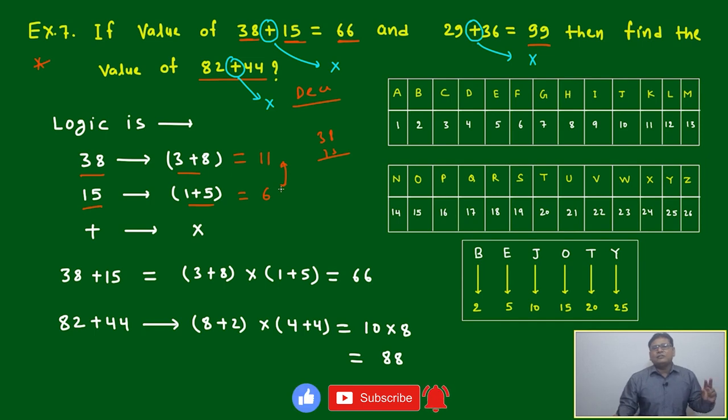This is called sum of digits. If you are strong in number systems, you know digit sum is getting the sum of digits till getting a unit digit, but sum of digit is just adding the numbers only once. 3 plus 8 gives you 11, and 1 plus 5 gives you 6. Multiply them to get 66.